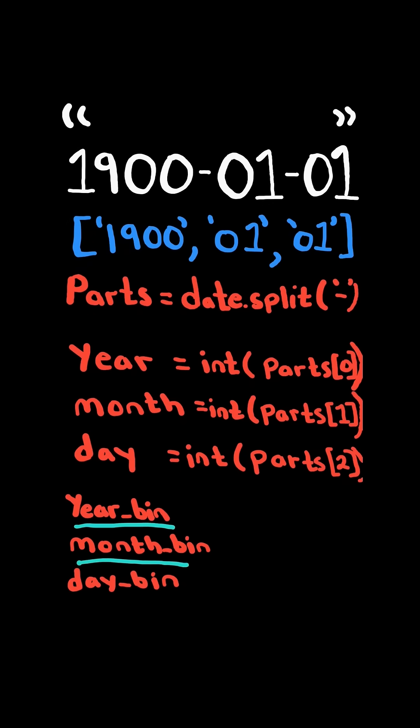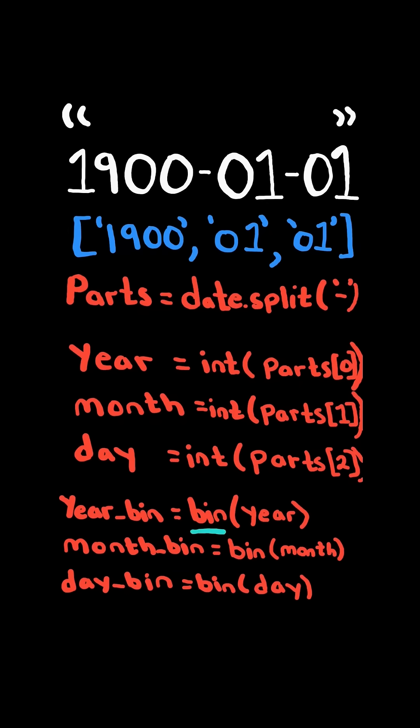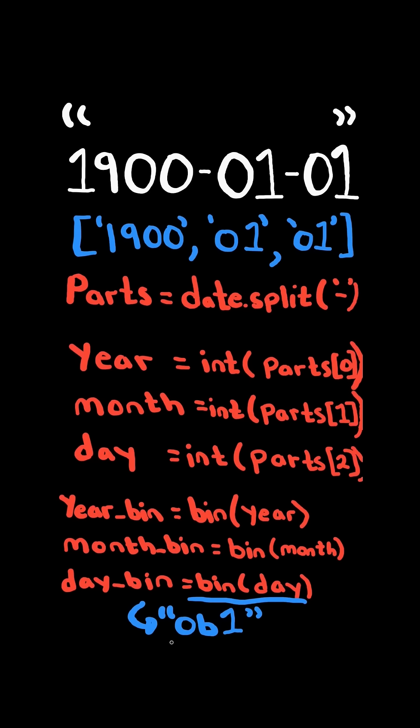We will then convert each component to binary by using the built-in binary function on the integers. The binary function converts the integer into a string binary. The result always starts with a 0b followed by the binary representation. So we slice the result to remove the prefix.